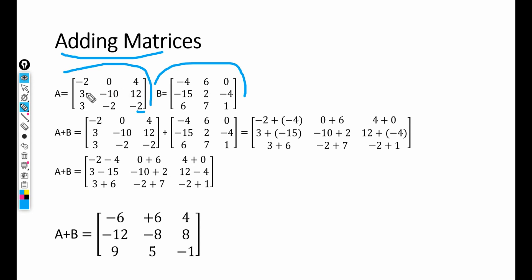Matrix A is a 3 × 3 matrix — there are three rows and three columns. Matrix B is also a 3 × 3 matrix. They both have the same dimensions, and when the dimensions are the same, we can add those matrices.